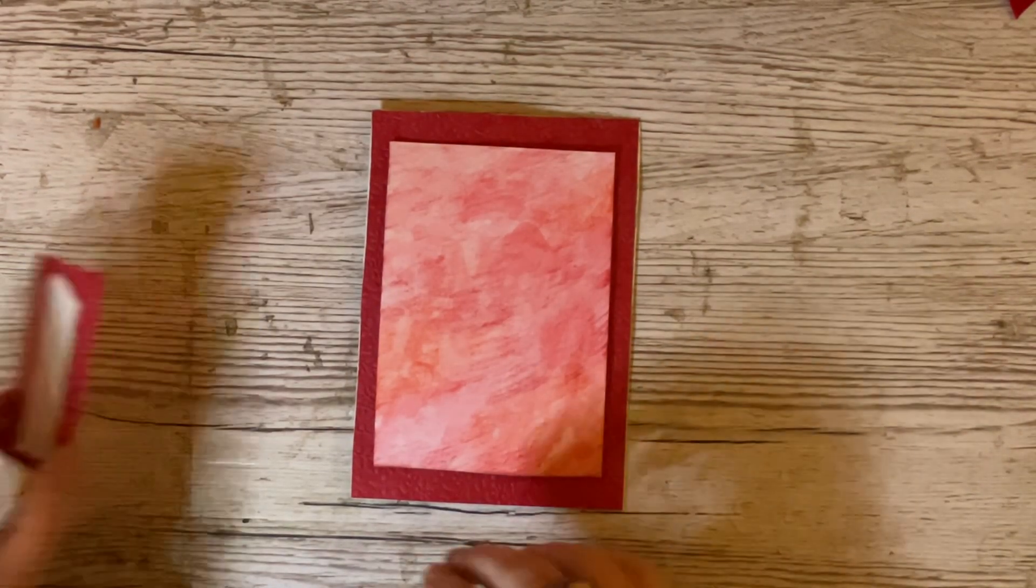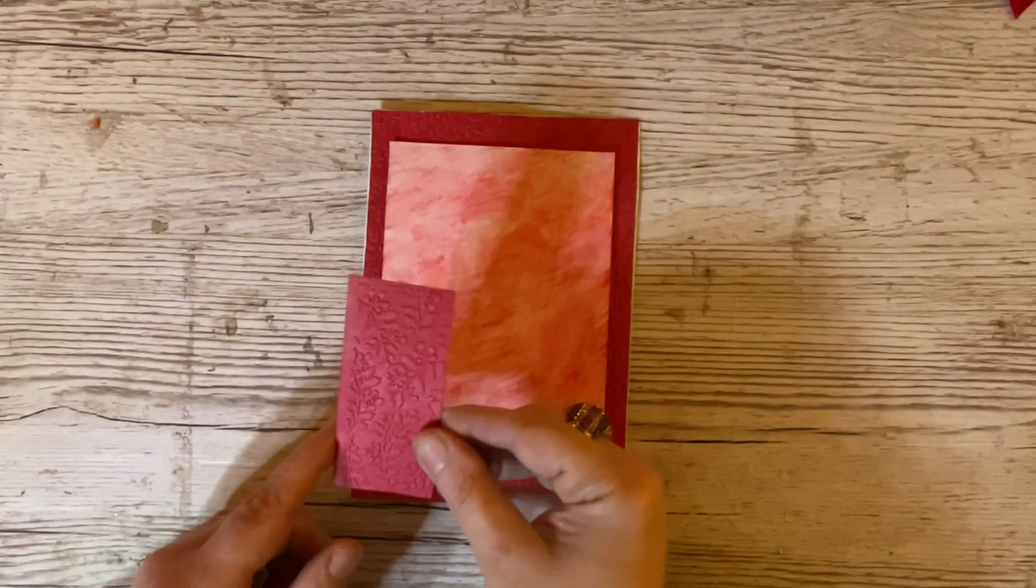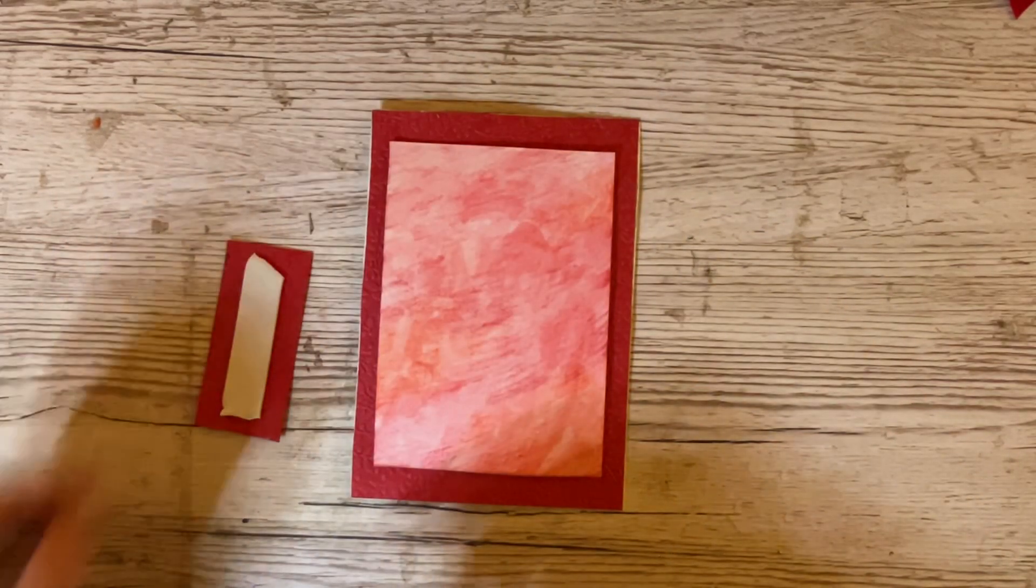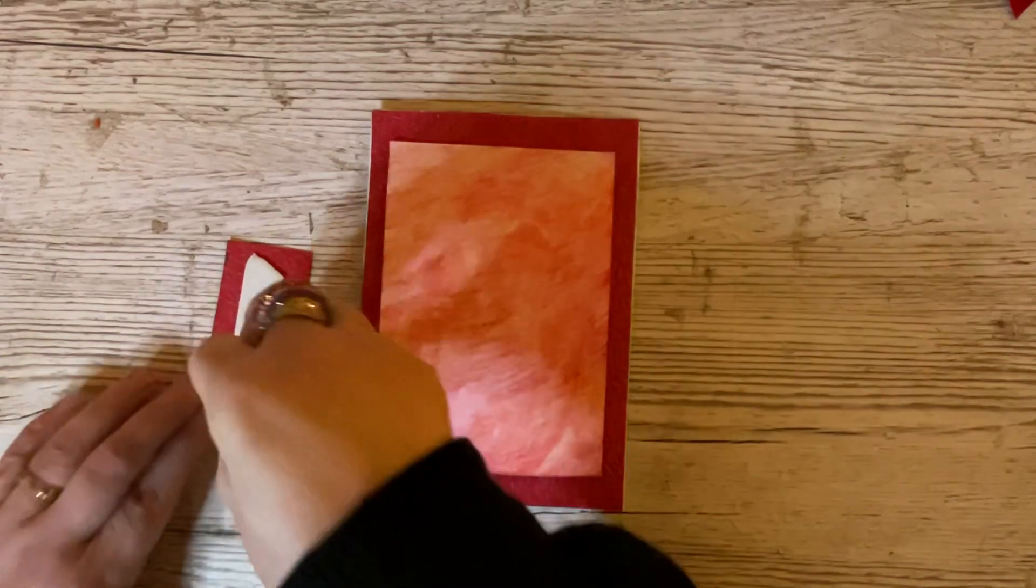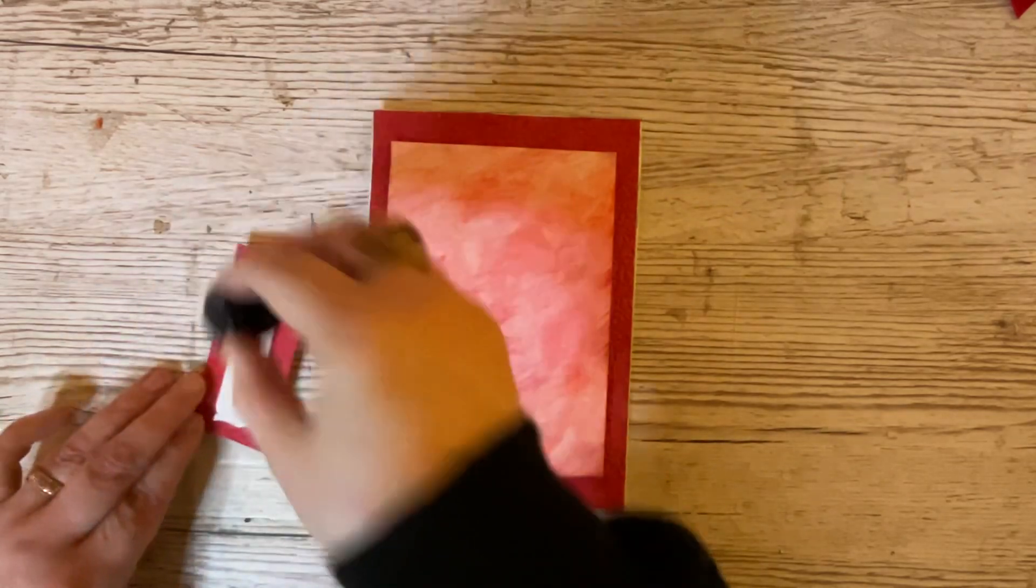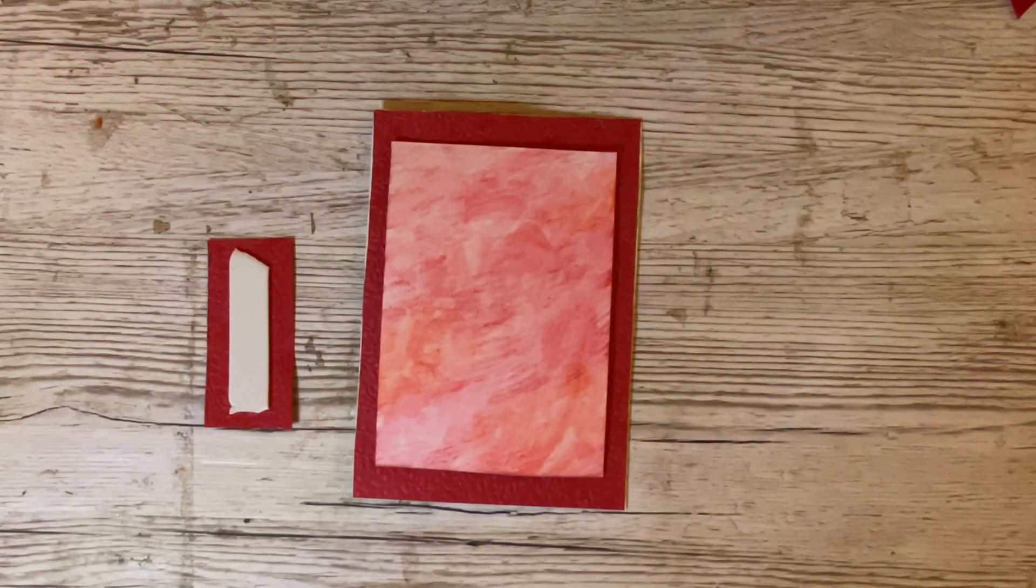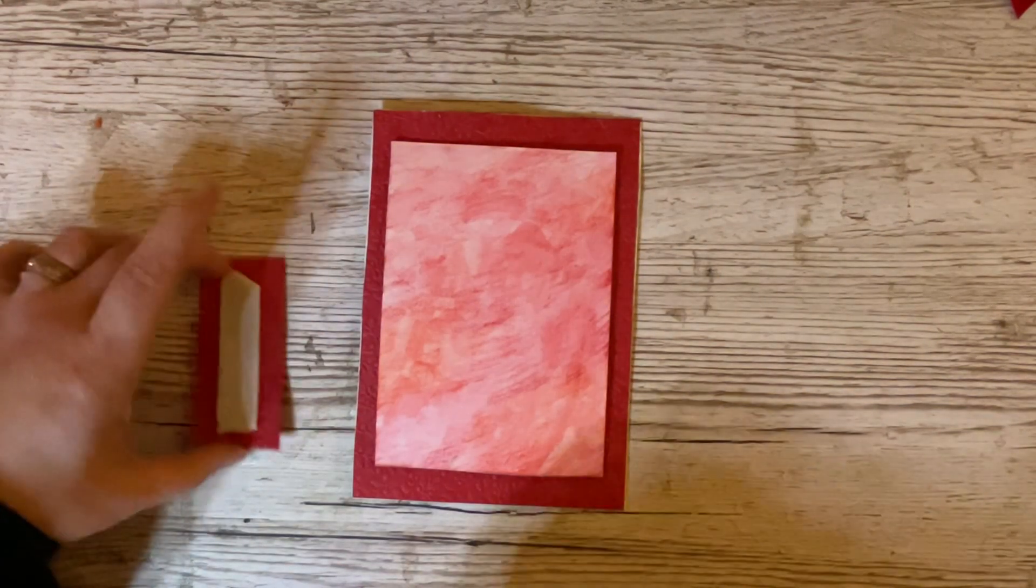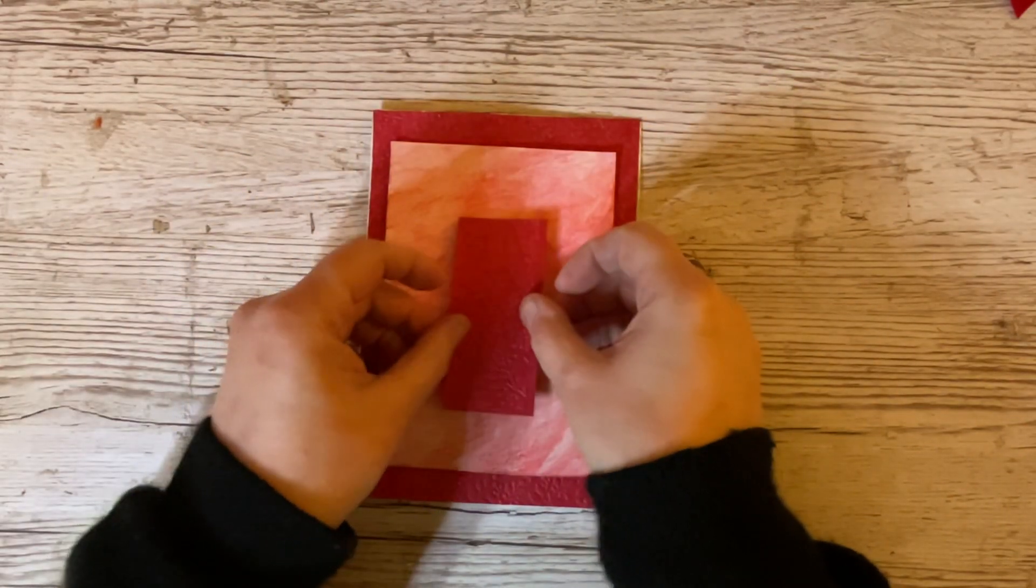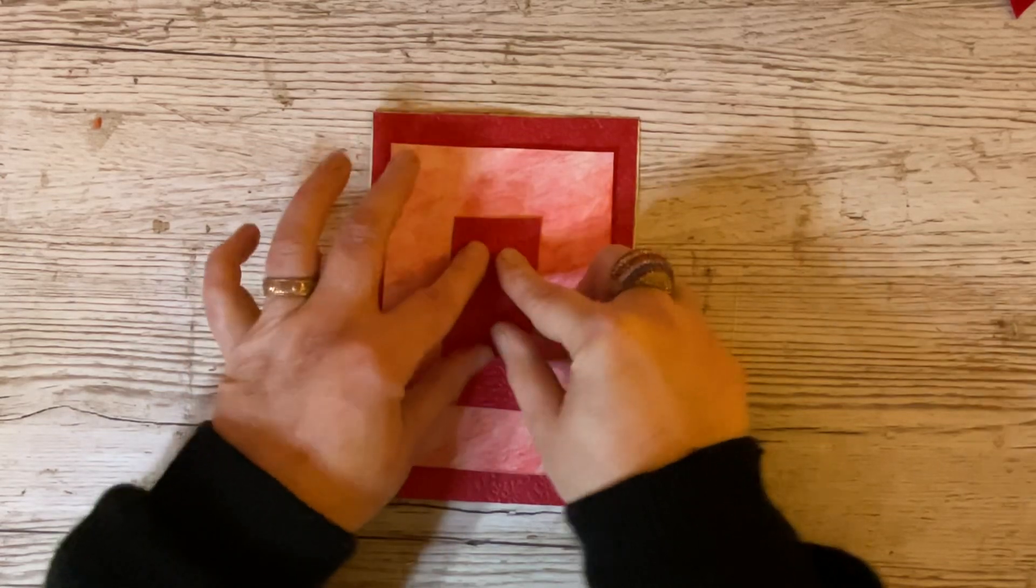I've got one more embossed mat, and that measures three and a half by one and a half inches. Again, I'm just going to put a little bit of glue stick on the back of there, just to give us a little bit more time. I'm just going to pick that up. It doesn't matter which way it goes. It's not directional. I'm going to stick that roughly in the middle.